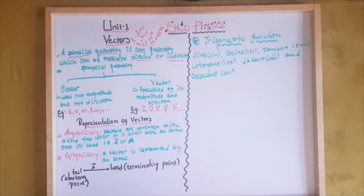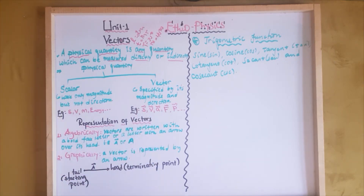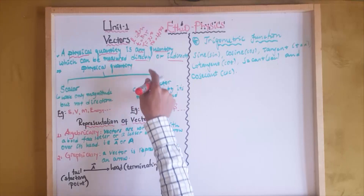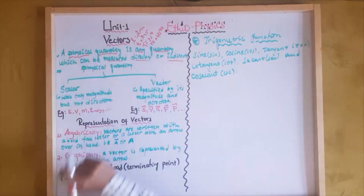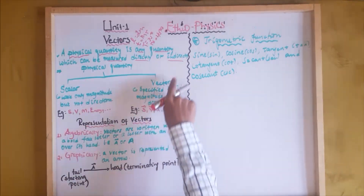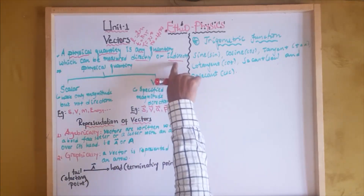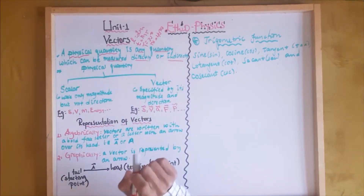Let's consider what physical quantity means. Physical quantities are measured either directly or indirectly. Directly measured quantities are the same as fundamental or basic quantities. Indirectly measured quantities are the same as derived quantities.